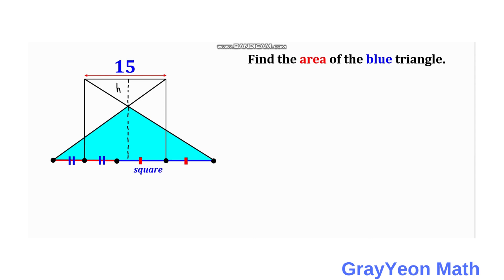And this length below, which is the height of the blue triangle, this should be actually 15 minus H, because the side of the square is actually 15 units.